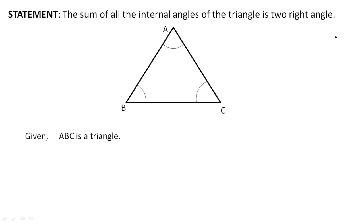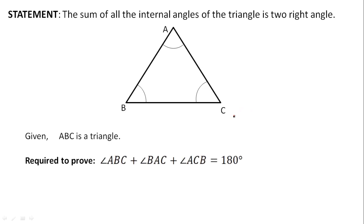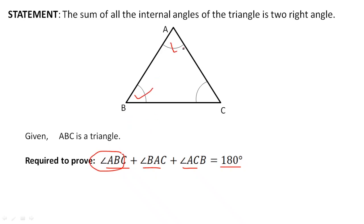Given: ABC is a triangle. Required to prove: angle ABC plus angle BCA plus angle ACB equals 180 degrees. Angle ABC is this angle here, angle BCA is the angle situated here, and angle ACB is the angle here. When added, they will give us 180 degrees.